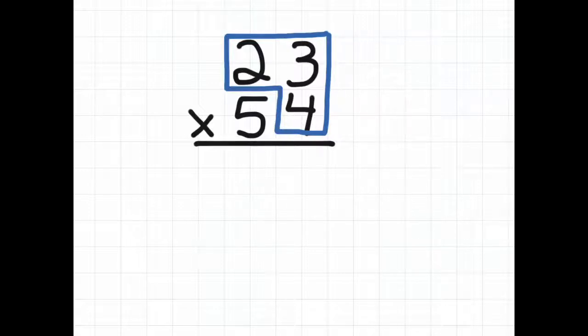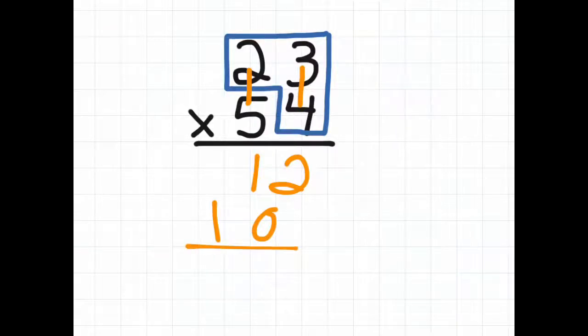Sometimes we see kids go 4 times 3 and then 5 times 2 and they say 12 and then 10, but that is not correct. So we're not doing that. We are trying to help us prevent the improper way to do it.